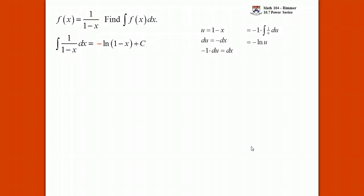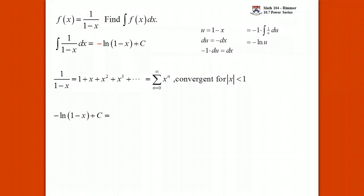That negative is going to be a little bit of trouble — we'll deal with it. But don't forget plus c now. When we're taking the derivative, we don't have a plus c, but now that we're integrating these are indefinite integrals with no limits of integration, so we have a plus c. Now on the other side, integrate that polynomial — the power series. One's integral is x; x's integral is x squared over 2; x squared's integral is x cubed over 3. We're finding anti-derivatives.